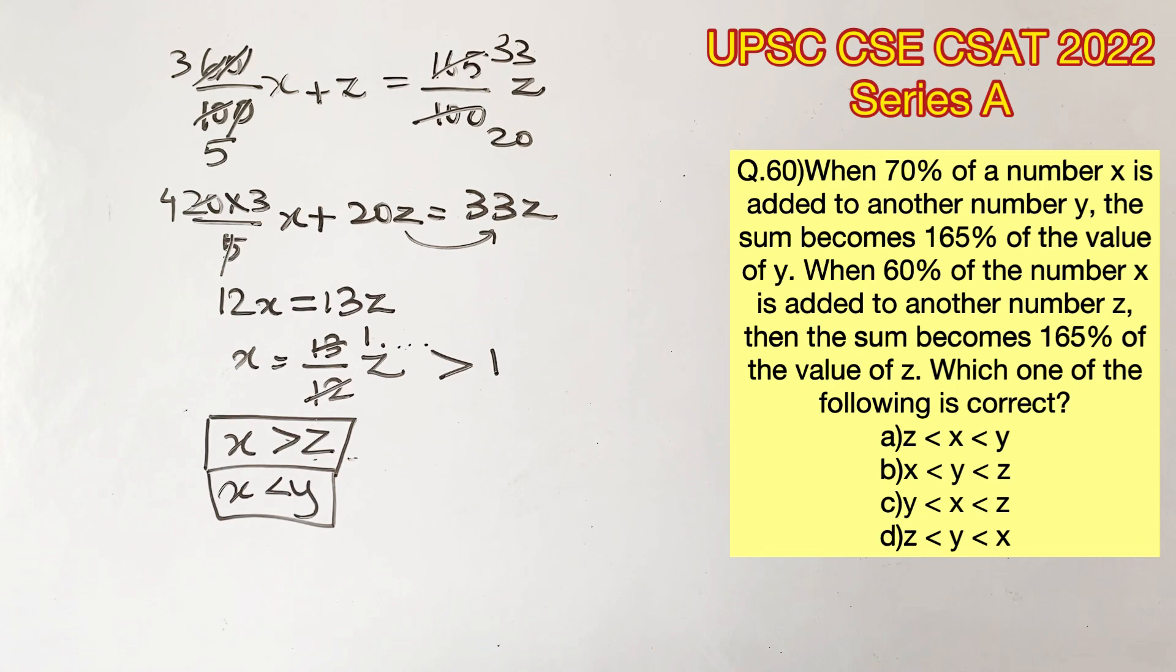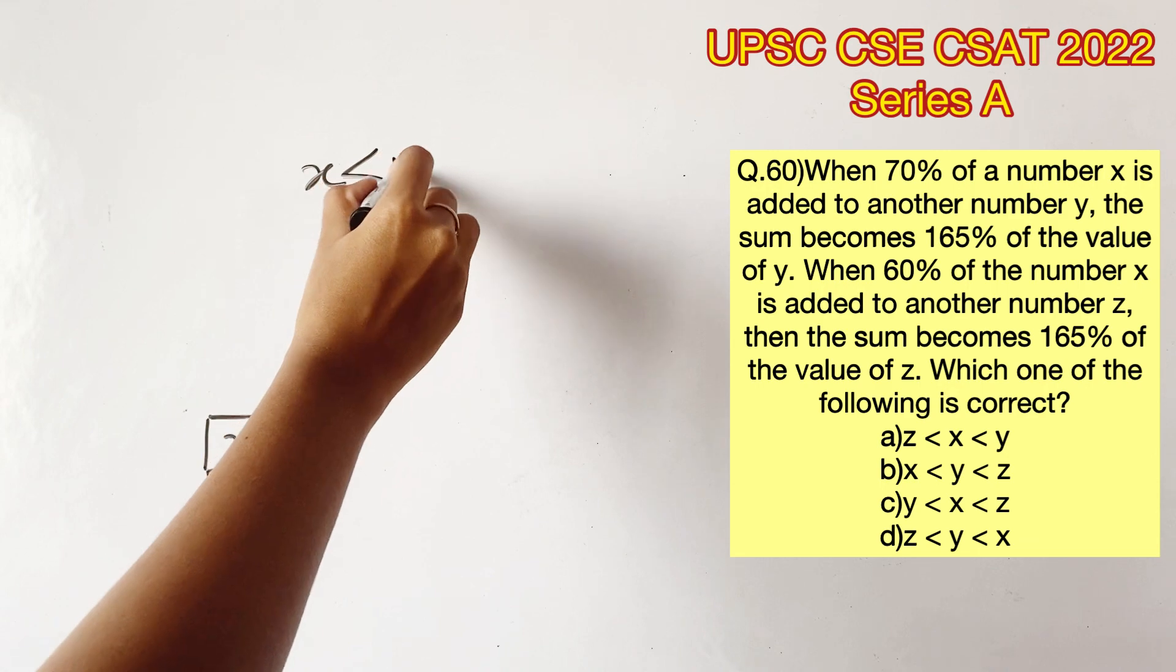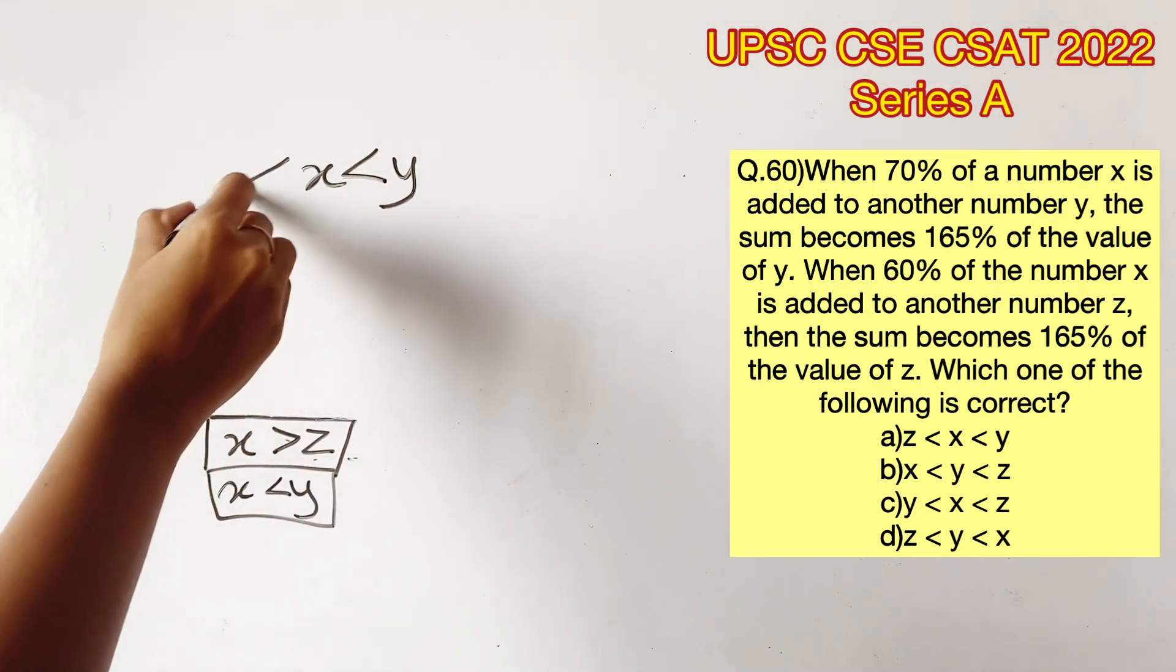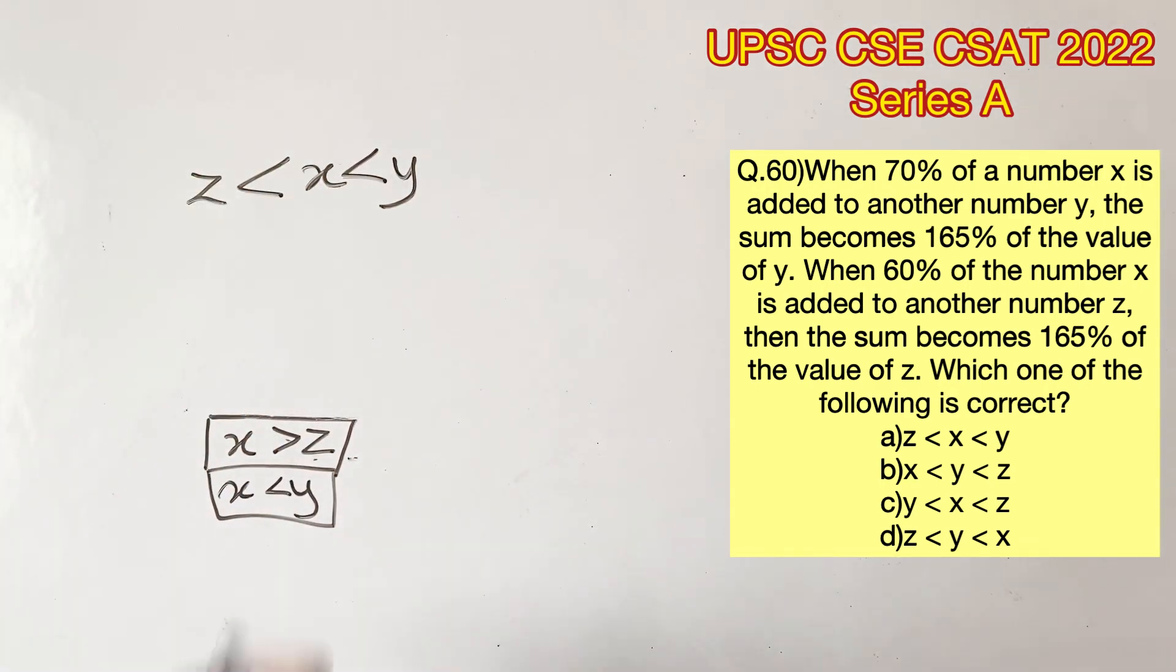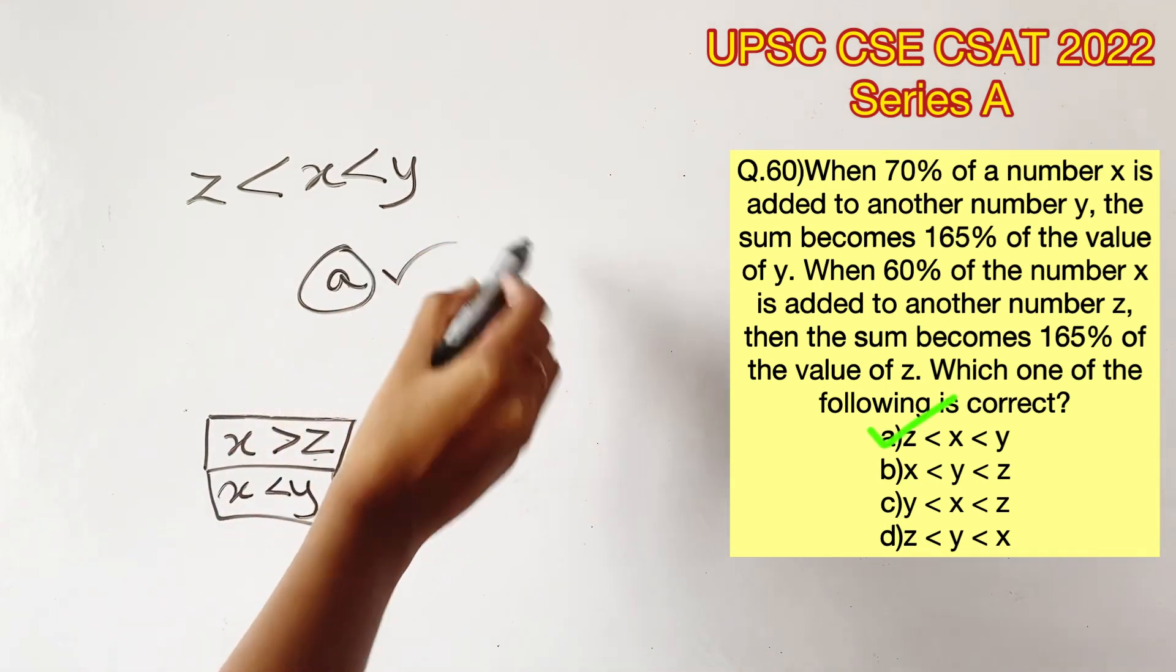So we can conclude that x is greater than z. Now let's write this in a single line, which will give us x is greater than z but lesser than y. So option a is the right answer.